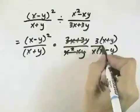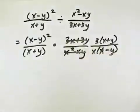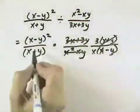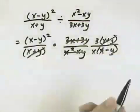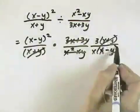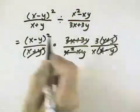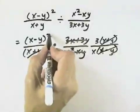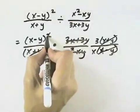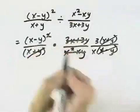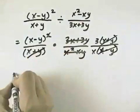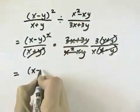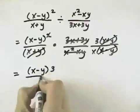So that this becomes our new second fraction. We can see a common factor of x plus y. Now we have a common factor of x minus y — this was two of those factors, x minus y times itself. So we cancel one of those, leaving the other factor. In the numerator, that leaves x minus y and a 3.